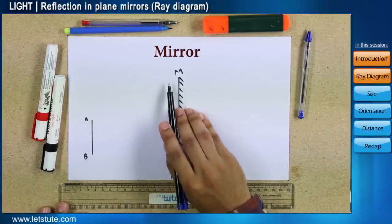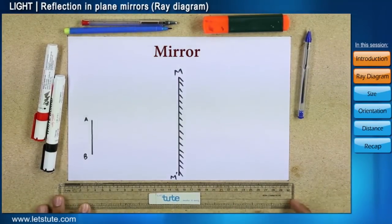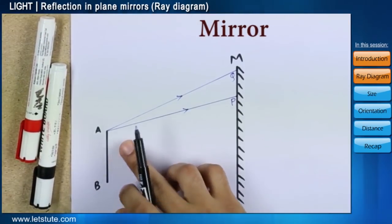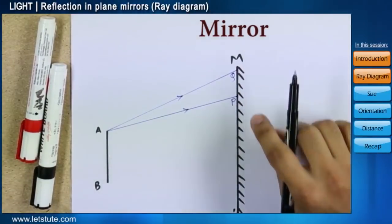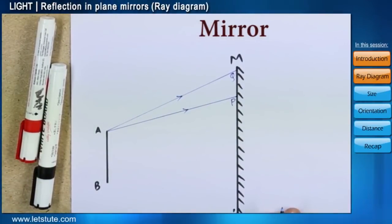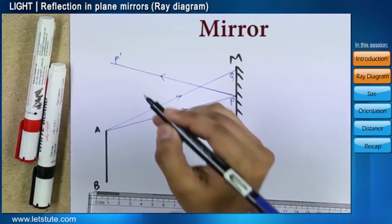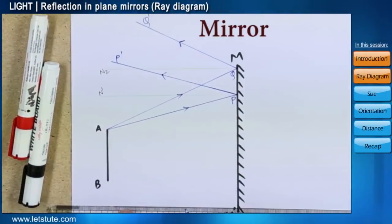So let's assume that there are two rays coming from either part A or B of object AB. If the rays are coming from point A, then let AP and AQ be incident onto the mirror at points P and Q respectively. After they strike the mirror, ray AP will be reflected as P, P dash, while ray AQ will get reflected as Q, Q dash.